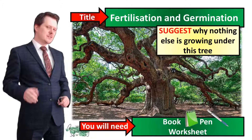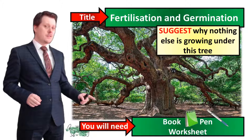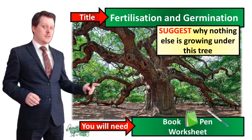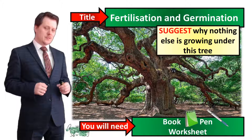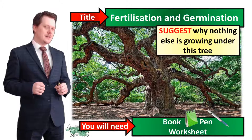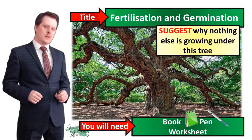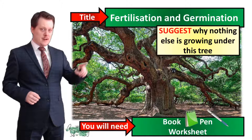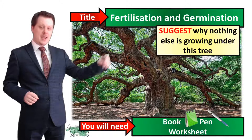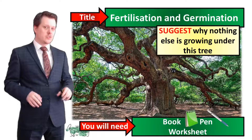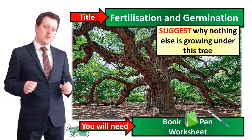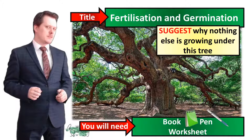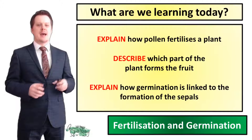There's nothing growing underneath this tree because this tree is absorbing all of the nutrients, so it is out-competing all of the other competition. It's also got a very large canopy, so if anything was to try and grow underneath it, it's probably not going to get enough sunlight to be able to photosynthesize.